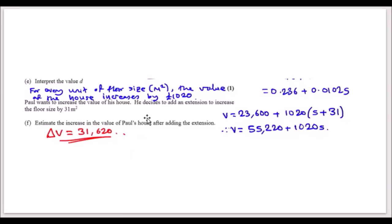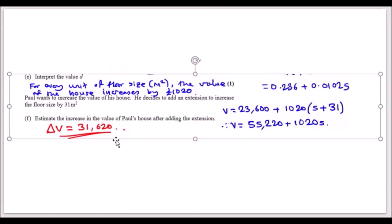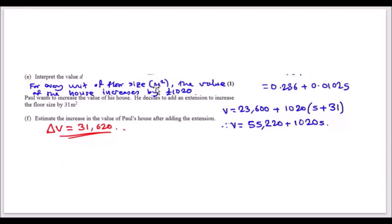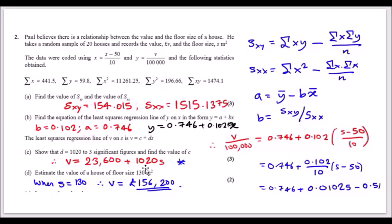Interpreting coefficient d = 1020: for every additional square metre of floor size, the house value increases by £1,020. The constant c = 23,600 represents the baseline or initial value of the house — that is, the value when floor size is at the reference level.